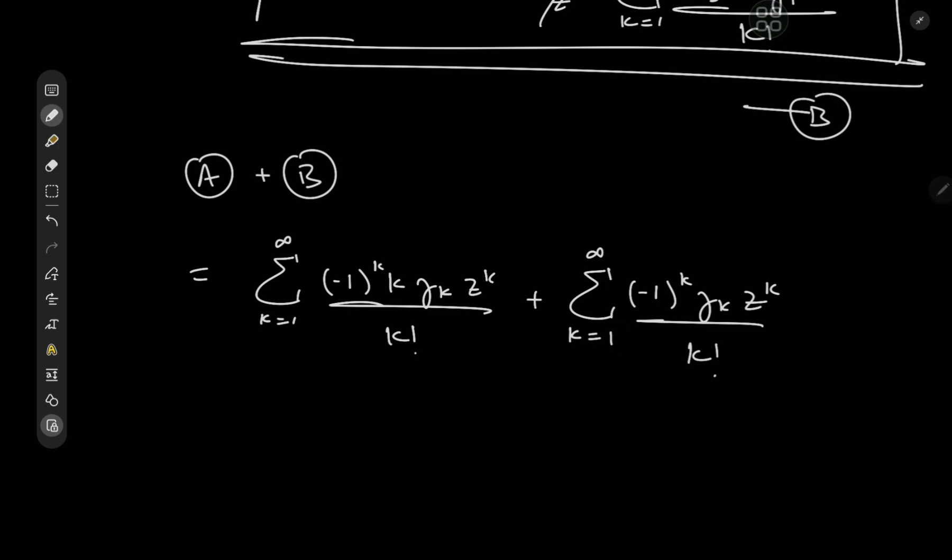And from this sum, I would like to single out the k = 0 term, which is (-1)^0, which is 1. γ_0 is the Euler-Mascheroni constant. γ_0 equals Euler-Mascheroni constant. That is a very, very cool statement in itself.